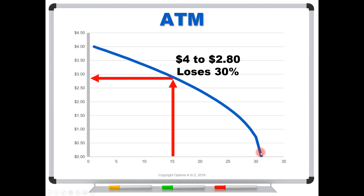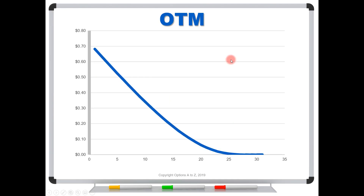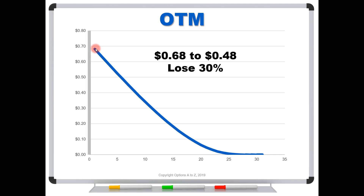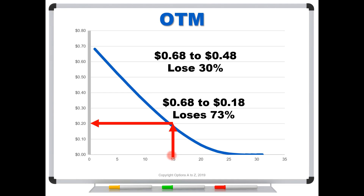Now let's take a look at the out of the money option — the $115 strike. It looks very different, doesn't it? The at the money curve bowed outward and then went off a cliff, but this one is the opposite: it starts out accelerating and then as you get closer to expiration it slows down, and it's almost zero in the final five or six days. If we mistakenly assume this option follows the standard curve, the $115 strike at 68 cents would appear to lose just 30% at 15 days — but the reality is it's actually trading for only 18 cents after 15 days.